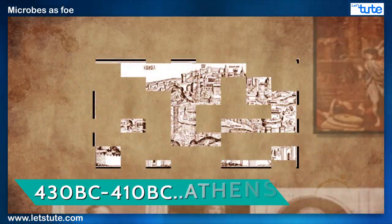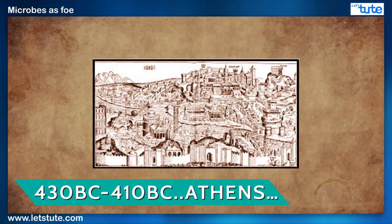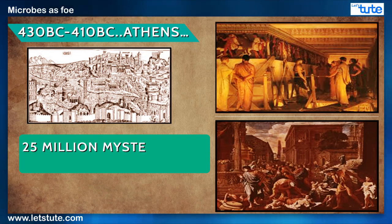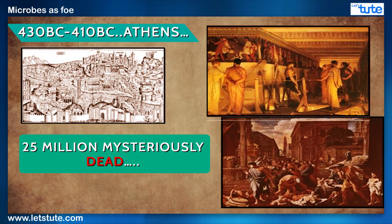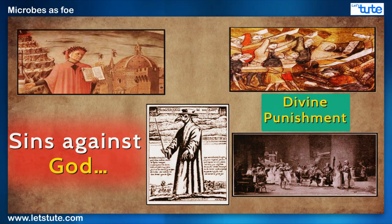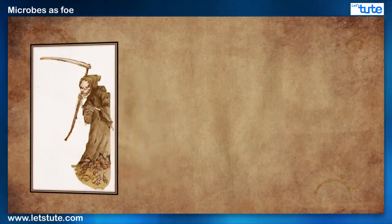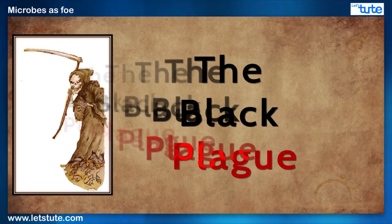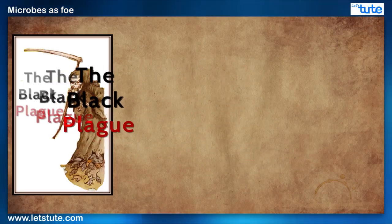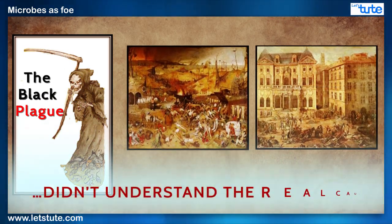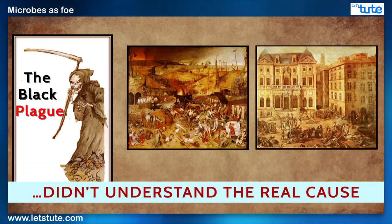Between 430 and 410 BC, nearly one third of the Athenian population was killed by a mysterious disease. People believed that it was a kind of divine punishment for sins against God, and hence called it the Black Death or Black Plague. The aftermath was the loss of countless lives only because humans did not understand the real cause behind it at the time.